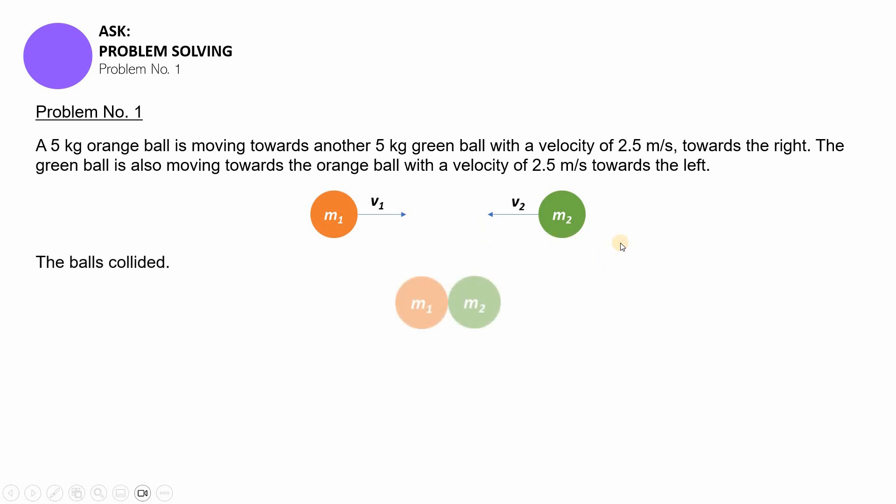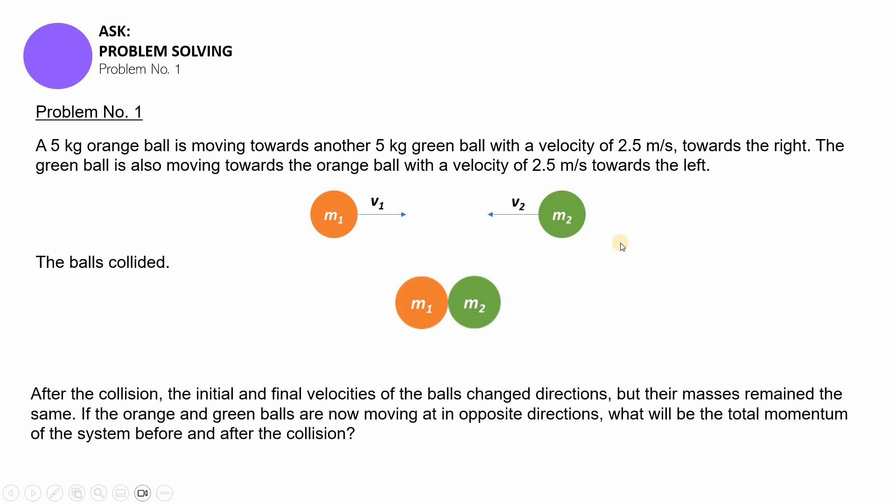So basically, pareho lang yung mga velocities nila, they have opposite directions, as shown in this visualizer. Now, these balls collided, and after the collision, the initial and final velocity of the balls, nagpalit ng mga directions. Pero yung kanilang mga masses, nanatili lang naman na pareho. So walang natapyas, walang nasira. Now, if the orange and the green ball are now moving in opposite directions, ano yung magiging total momentum ng system before and after ng collision? Let's find out.